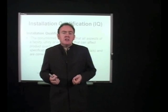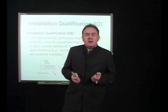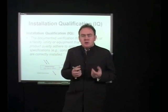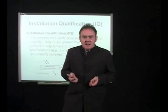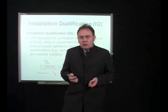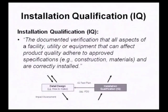Installation is the documented verification that all aspects of a facility, utility, or equipment that can affect product quality adhere to approved specifications and are correctly installed. From the V-Model, our IQ is based on our detail design documentation, and the verification is twofold: we want to make sure all critical components are of the correct specification in the context of construction documentation, materials of construction, calibration, etc., and secondly, that they are correctly installed.